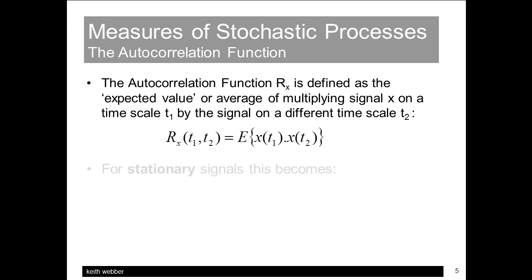We'll consider autocorrelation functions as defined here. For stationary systems, that is, ones whose statistical measures don't change with time, correlation doesn't depend on the absolute timescales used, but is simply a function of the timeshift tau between the two traces.